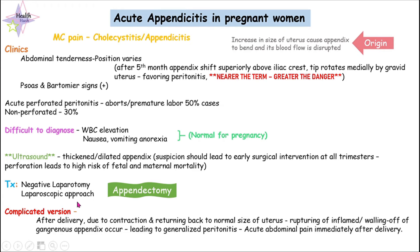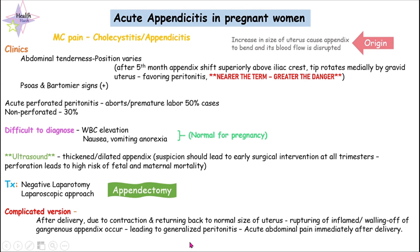We will proceed with appendectomy, which can be performed via a negative laparoscopic approach. If not diagnosed at an early stage, these patients can also develop peritonitis immediately after delivery. After delivery the uterus will contract and return back to its normal size, and this drastic sudden change can result in rupturing of an inflamed appendix or walling off of a gangrenous appendix.